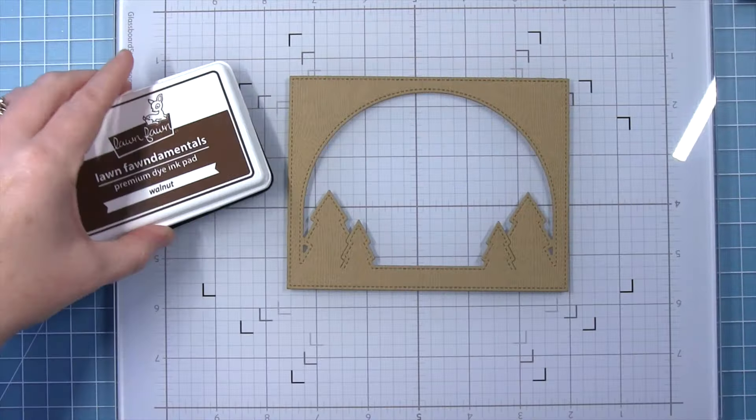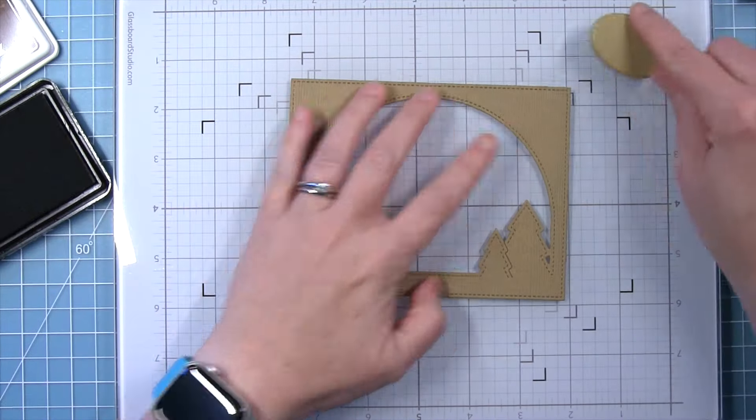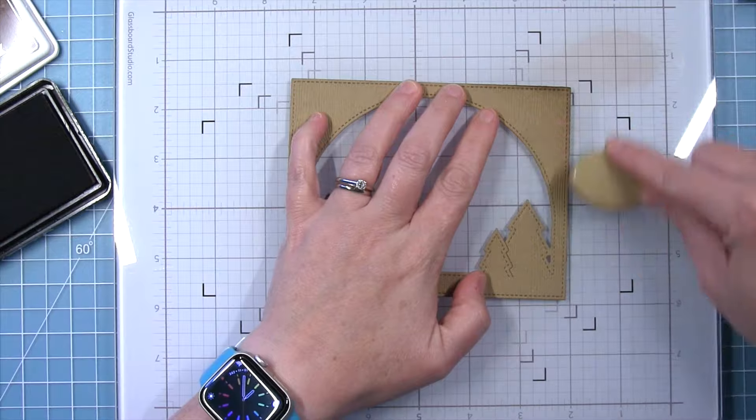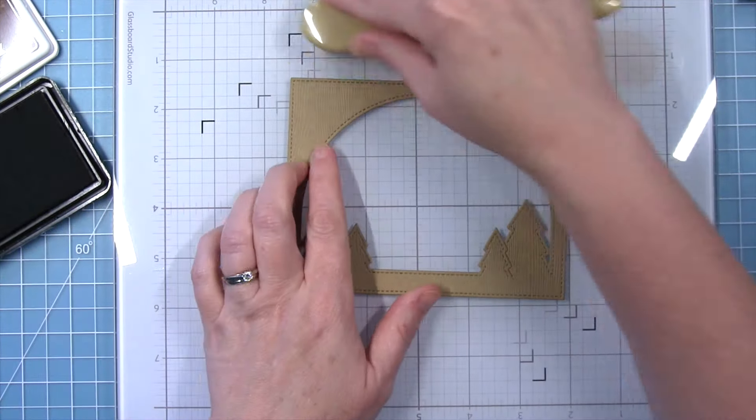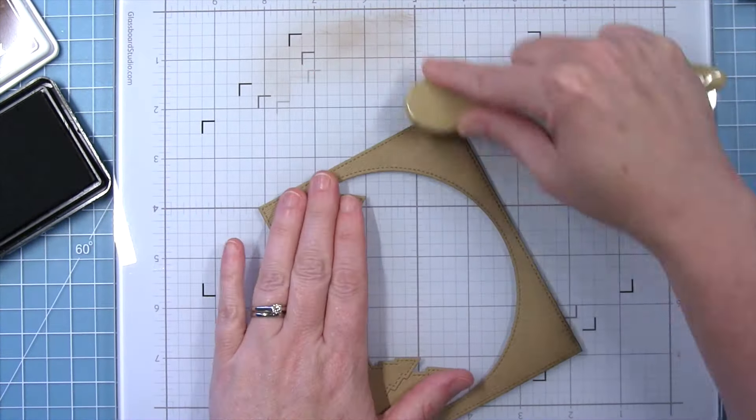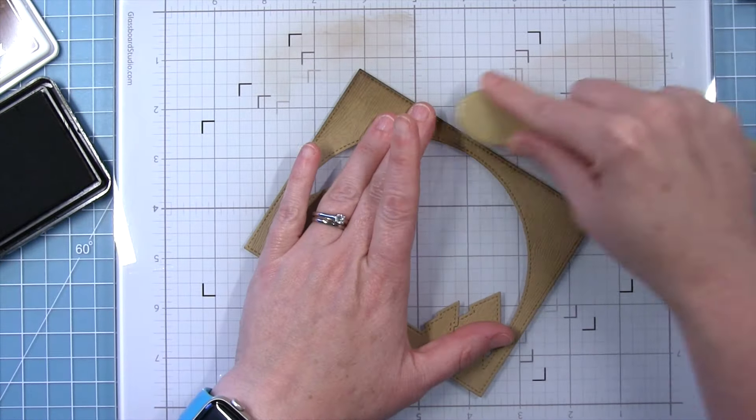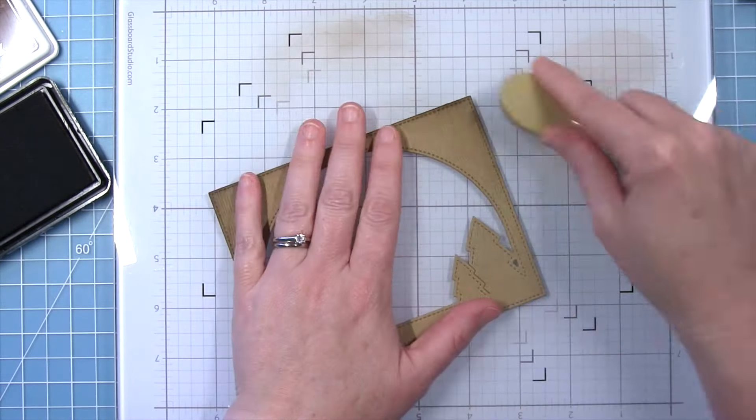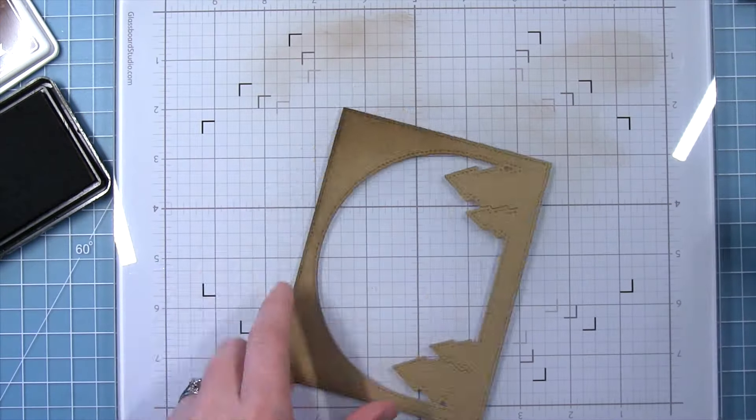Now I always feel like some ink blending brings these die cut pieces to life, and I'm going to start out with my frame. I'm using some walnut ink and you can see as I add this and dust the edges of this frame, it really makes that stitching detail stand out and also that wood grain really kind of comes to life.